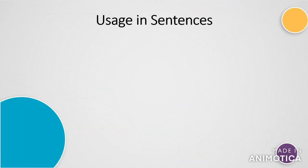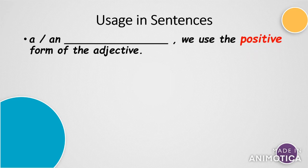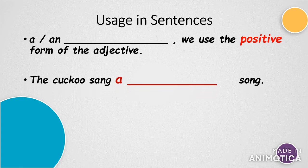Now let's try to understand the usage of degrees in sentences. Many a times questions may come wherein we have to complete the sentences using the correct form of adjectives. If in a sentence the blank appears just after the articles 'a' or 'an', we use the adjective in its positive degree. For example: 'The cuckoo sang a ___ song' — the answer is 'sweet'. After the article 'a' there was the blank, and that is why we use the adjective in its positive degree.